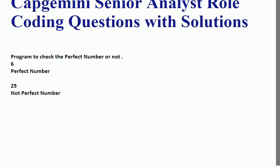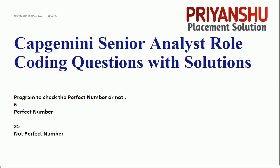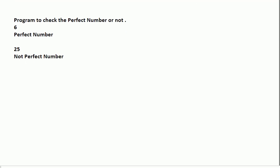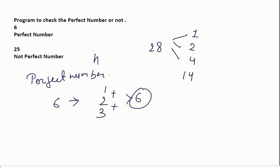Next question is Capgemini Senior Analyst question: program to check the perfect number or not. You need to check if the given number n is perfect or not. What is the definition of perfect number? A perfect number is, for example, six is a perfect number. How? Factor of six: six is divided by one, two, and three. The addition of these all is six. For example, twenty-eight is divided by one, then two, then four as well and fourteen, and seven as well.